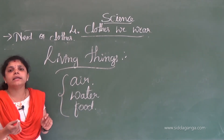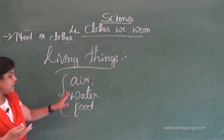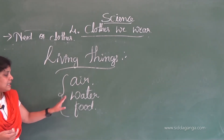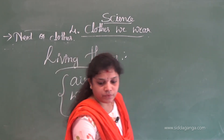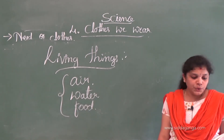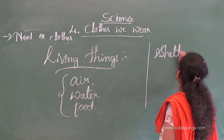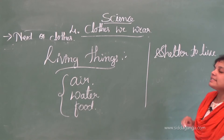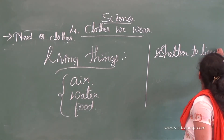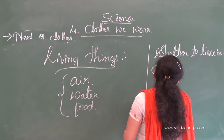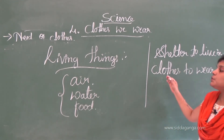Air, water, and food are very essential to all living organisms, including human beings. Besides these, human beings need other things also — for example, we need shelter to live in, and we also need clothes to wear. These things are very essential to human beings.